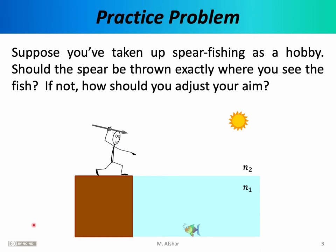To emphasize the distinction between where objects are actually located and where your vision system sees them, let's do a practice problem. Suppose you've taken up spear fishing as a hobby. Should the spear be thrown exactly where you see the fish? If not, how should you adjust your aim? So this is you — you've taken up spear fishing and gone to a lake. As you're looking at the lake, you see a fish underwater.